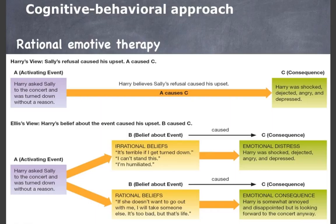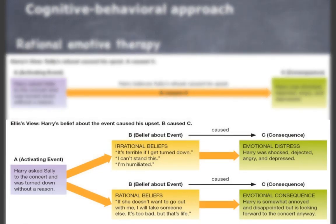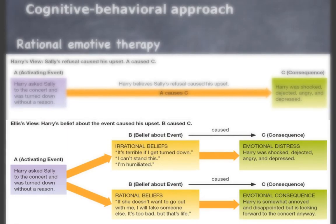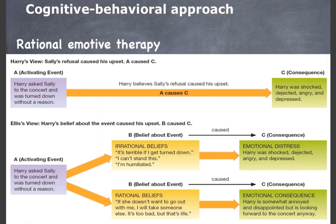Rational emotive therapy is a directive form of psychotherapy designed to challenge the client's irrational beliefs about themselves or others. Designed by Ellis, it uses the ABC theory: A is the activating event, B is the person's belief about the event, and C is the emotional consequence. Ellis claimed it's not the event itself that causes the emotional consequence — rather it's the person's belief. A doesn't cause C; B causes C. If the belief is irrational, the emotional consequence can be extreme distress.